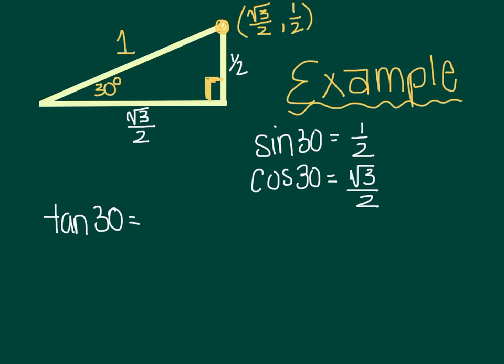Well, I've already said that it's y over x, so I'll put my y, which is 1 half, and then I'll divide it by my x, which is the square root of 3 over 2.